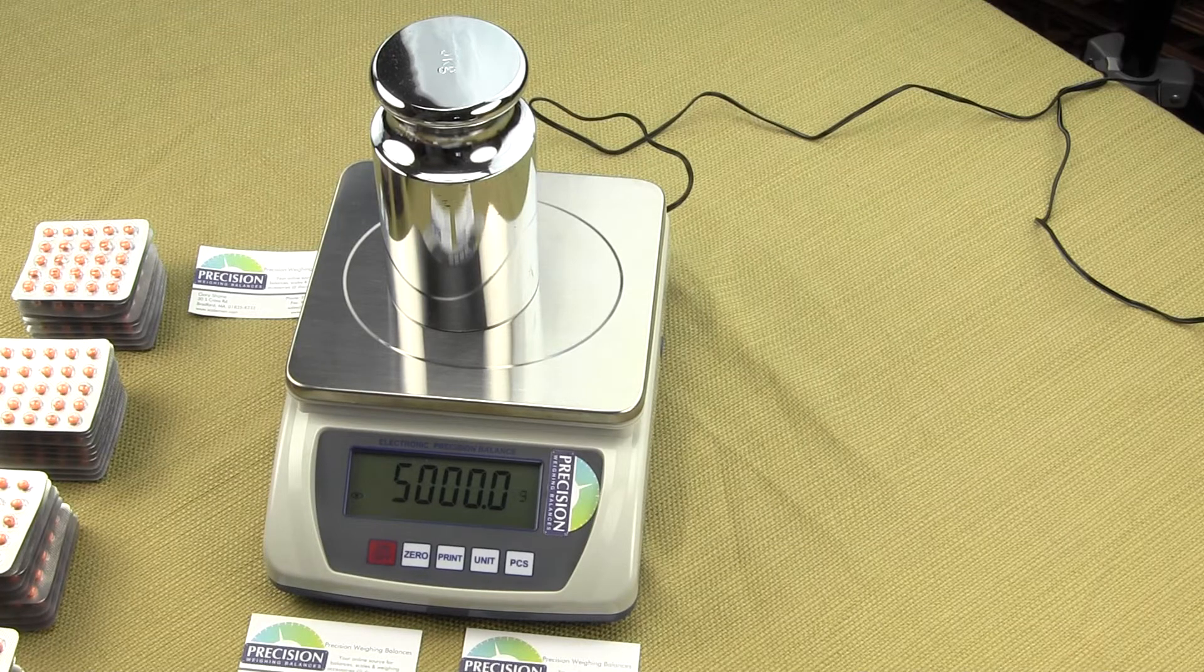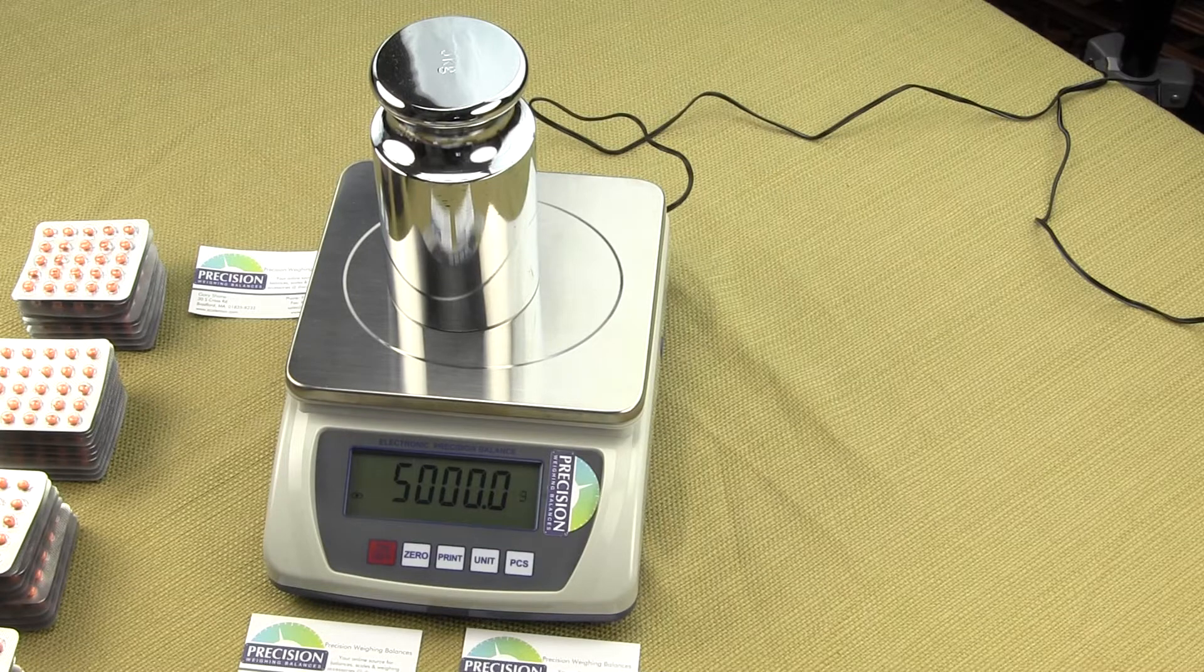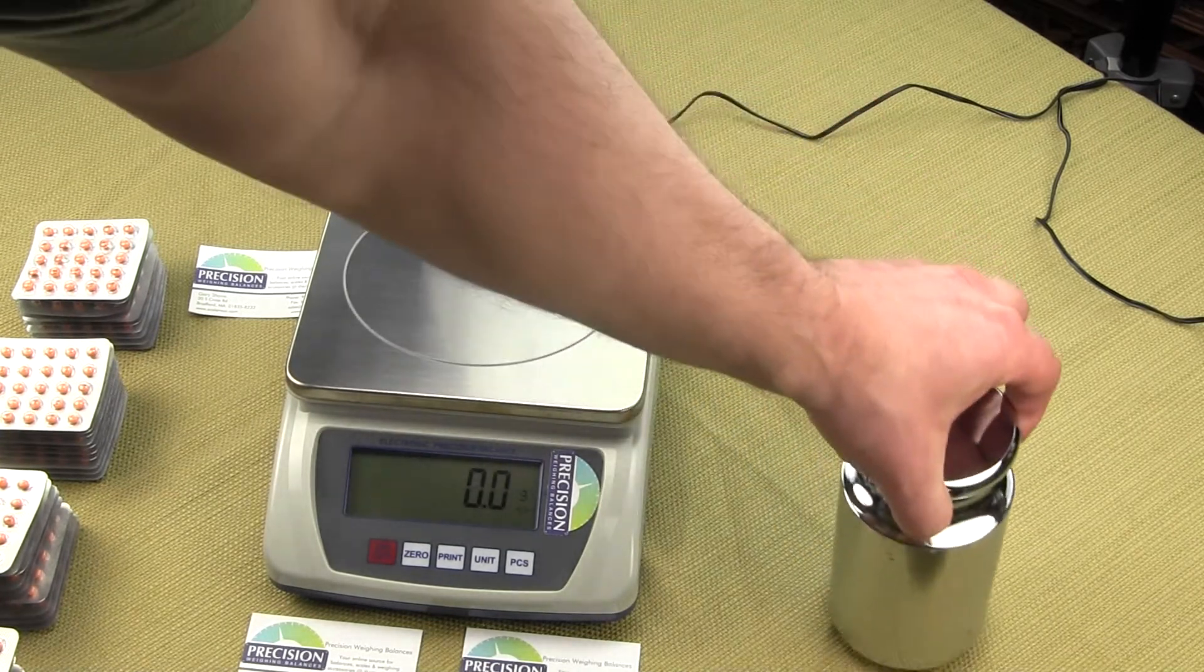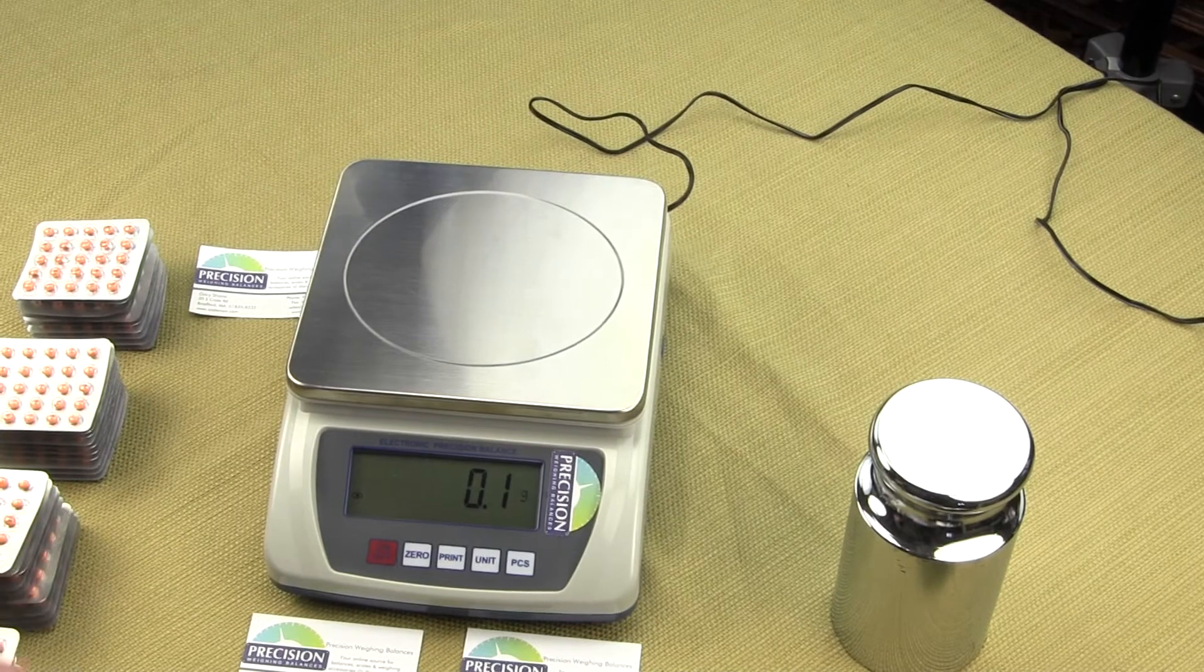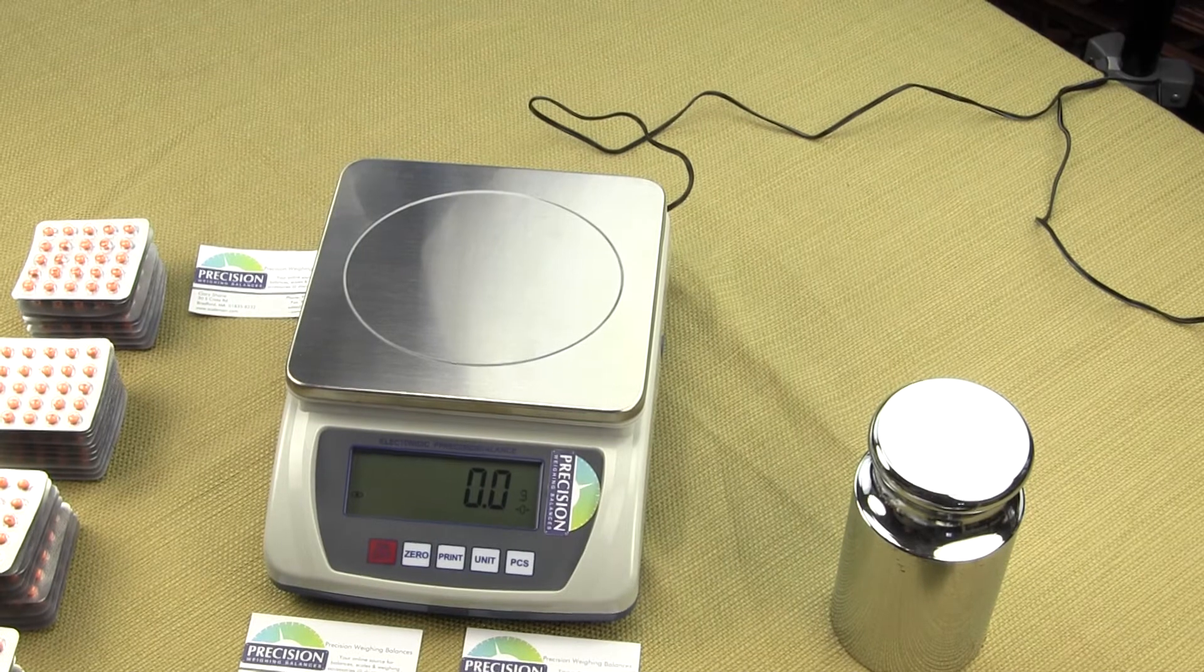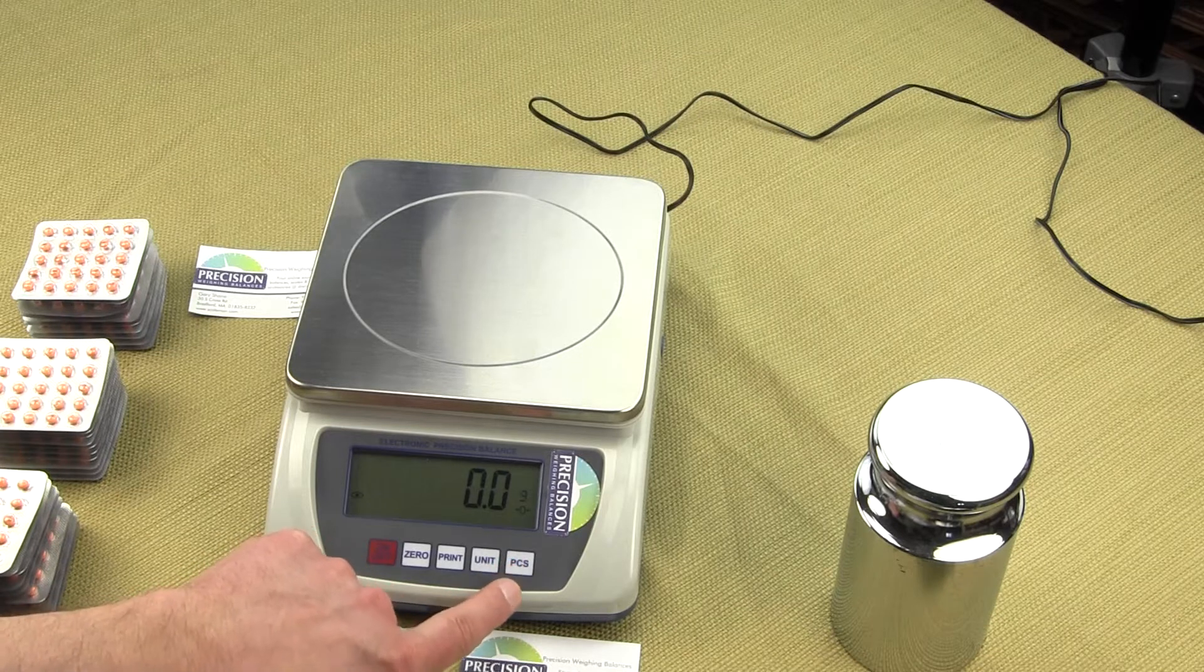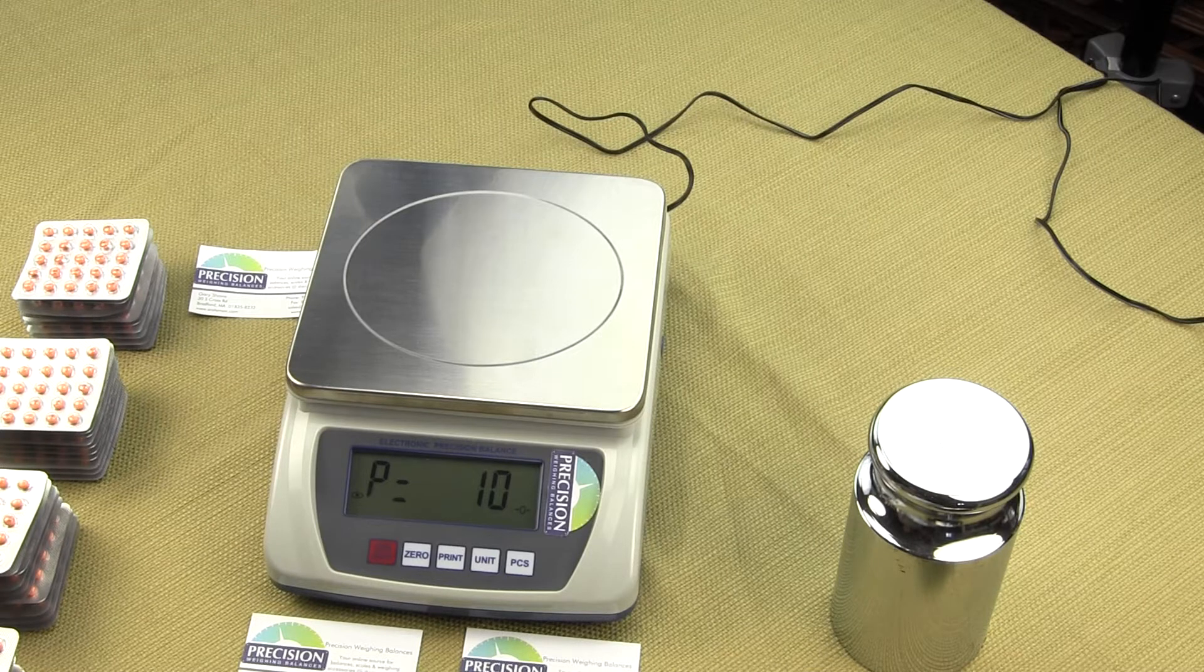The EPB10K is our number one seller since the price difference between models is not much. To start the parts counting feature, have your scale powered up and it should display 0.0. To get into the parts counting mode, press the PCS key, standing for parts counting. When you press the button, you'll see P equals 10.